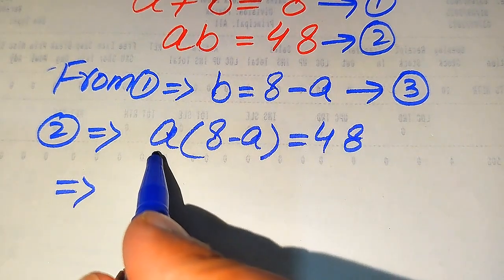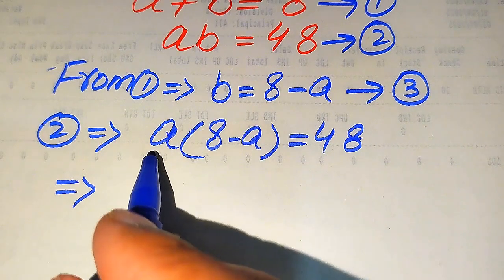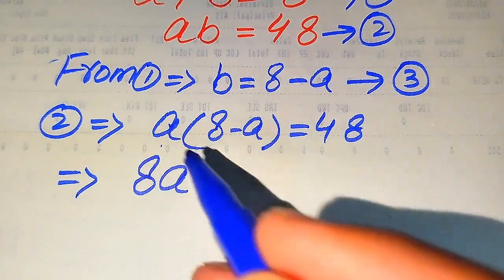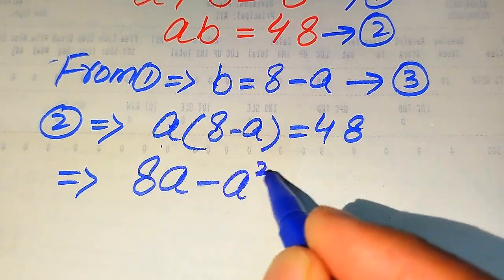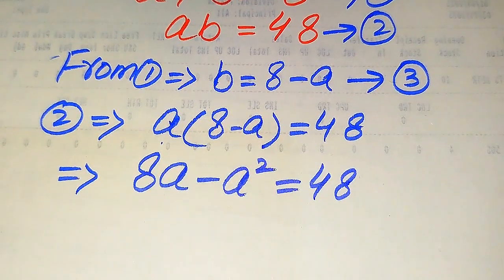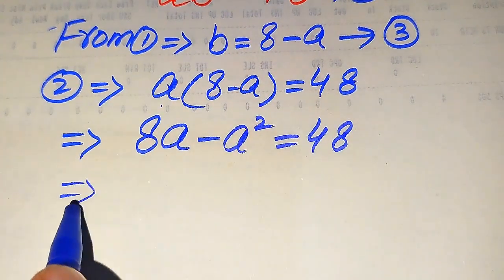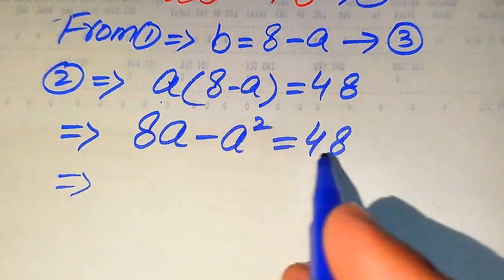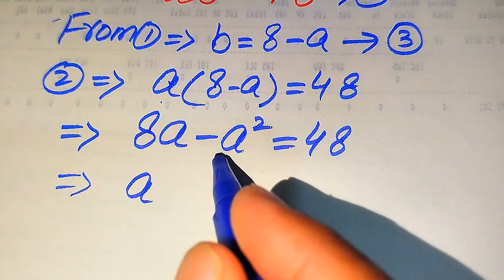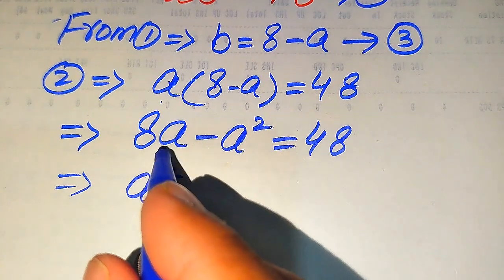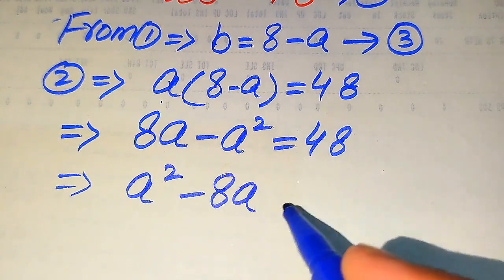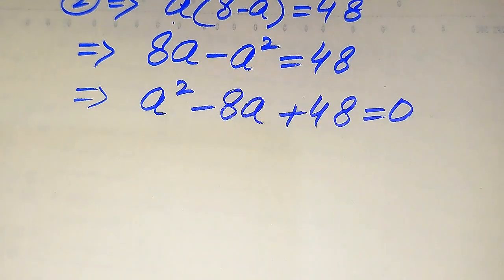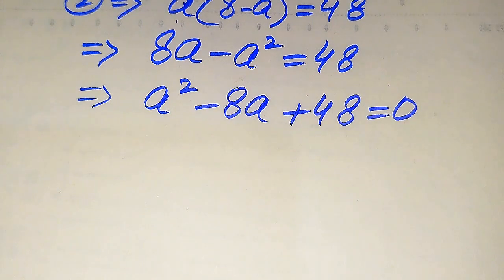We multiply a on both terms: a times 8 becomes 8a, and a times a gives a squared, equals 48. We then move both values from the left hand side to the right hand side, so minus a squared becomes plus a squared, plus 8a becomes minus 8a, and we get a squared minus 8a plus 48 equals 0. This is a quadratic equation.